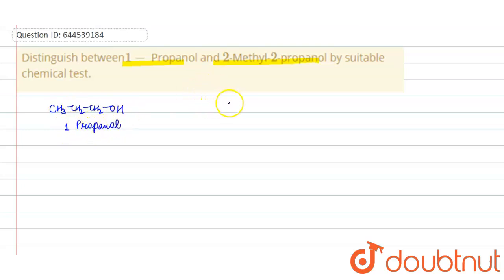And the structure of 2-methyl-2-propanol is like this: here CH3, here C-CH3, here CH3, and here OH. This is your 2-methyl-2-propanol.